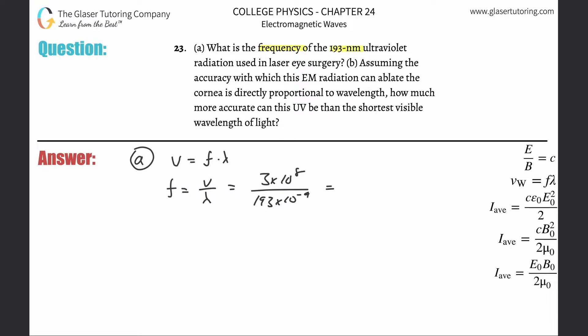Literally take out the calculator. That's how easy these problems become after a while. Three times 10 to the eighth divided by 193 times 10 to the minus ninth, and the frequency here is then going to be about 1.55 times 10 to the 15th. And that is in hertz.